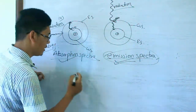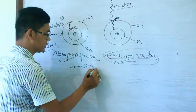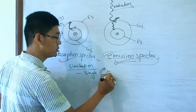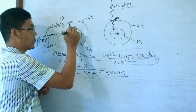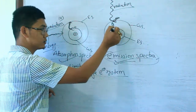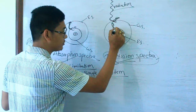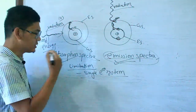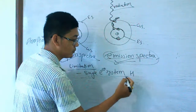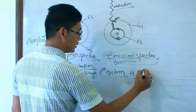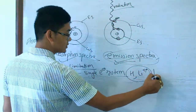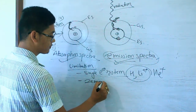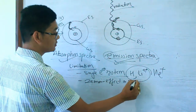This is the limitation of Bohr's model. What is the main limitation? It is only applicable for a single electron system. It is not applicable for multi-electron systems.